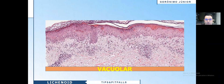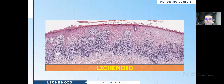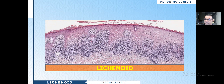Here is an example of Vacuolar Dermatitis, where you see vacuolization of the basal layer and interstitial and perivascular infiltrate. Here is an example of Lichenoid Dermatitis, when you see the dense, intense inflammatory infiltrate blurring the dermo-epidermal junction.